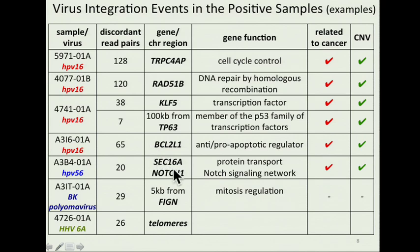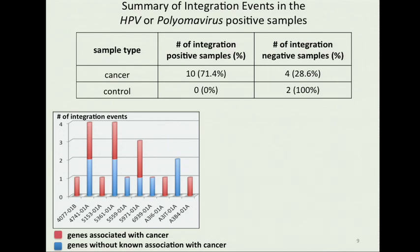You can easily recognize some very familiar genes, like Notch1, TP63, RAD51B involved in DNA repair, or BCL2L1, which could act as either a pro- or anti-apoptotic regulator. Such results support the idea that integration events probably contribute to cancer genesis, not only through viral oncogene expression, but also through modification of host tumor suppressors and oncogenes. To sum up, we detected integration events in 70% of HPV or polyomavirus-positive tumors, and two-thirds of them have at least one integration event involving cancer-related genes.